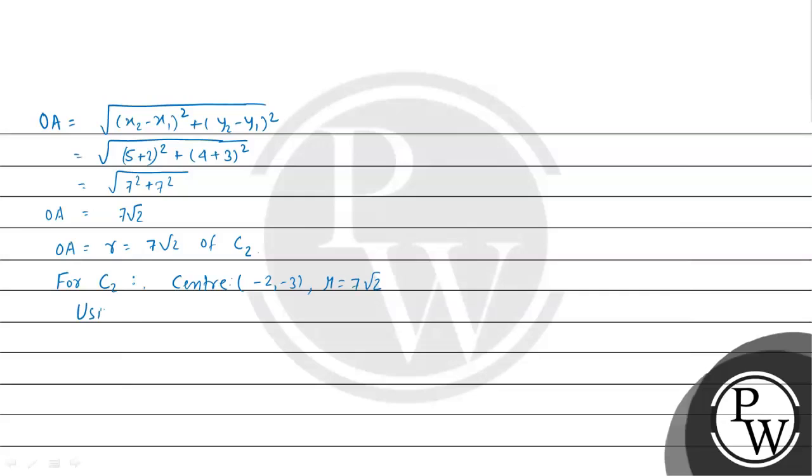Using the central form of circle, we can write: (x - h)² + (y - k)². With h = -2, this becomes (x + 2)².